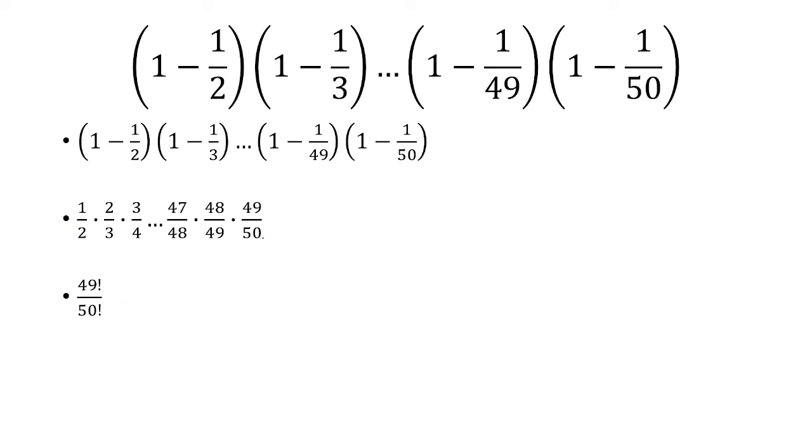In the denominator, if I multiply 50 by 49 by 48, all the way down to 2, that's the same thing as 50 factorial.